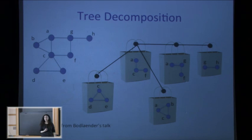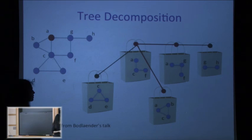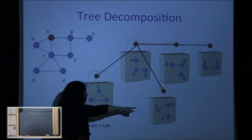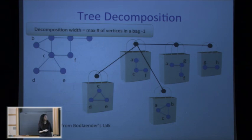Two conditions must hold. First, if you look at any edge of your graph, there must be at least one bag that contains it. Second, if you look at any vertex of your graph, the bags that contain this vertex must form a connected subtree of the tree. This makes a valid tree decomposition.